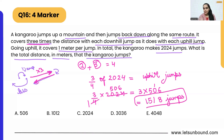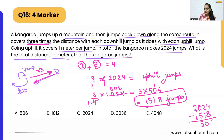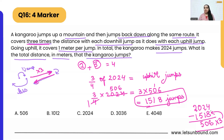That means the downhill jumps are 2024 minus 1518, which equals 506. You can verify: 506 times 3 is indeed 1518, confirming it takes three times as many jumps going uphill as compared to downhill.